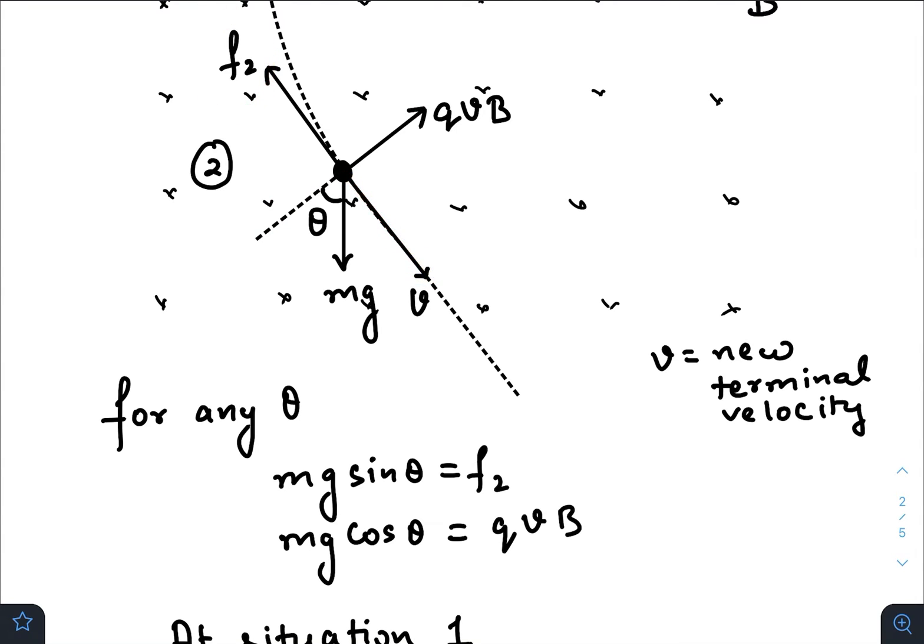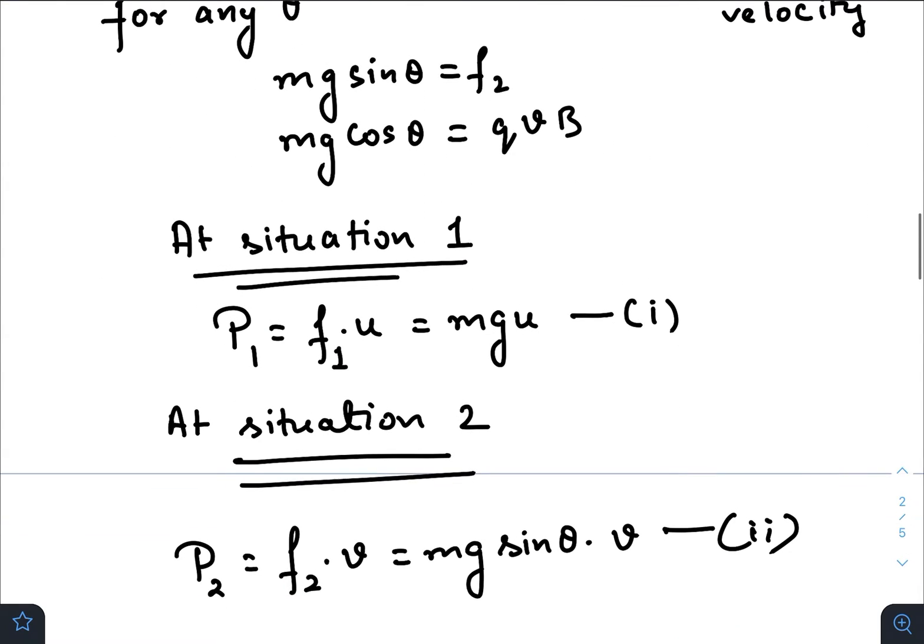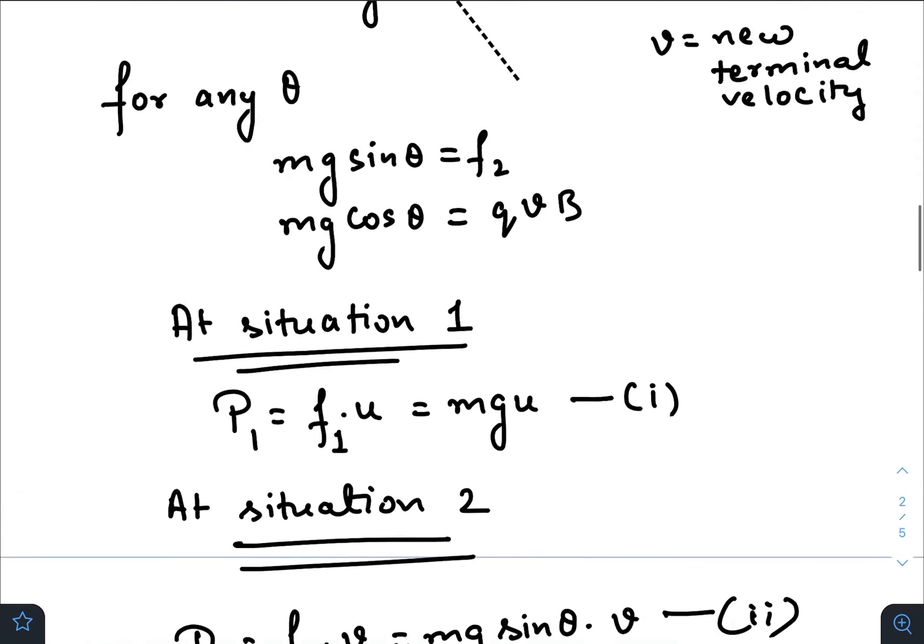So these are the two balancing equations. Now in situation one, the power that was being dissipated due to the resistive force was the resistive force itself times the terminal velocity u.